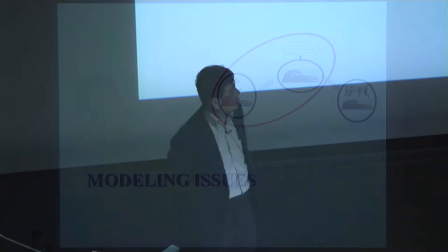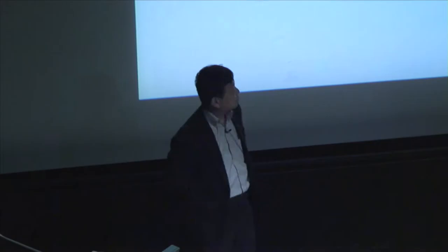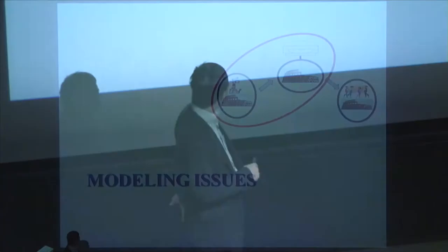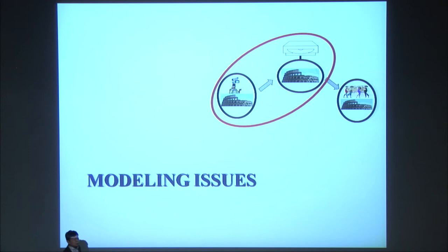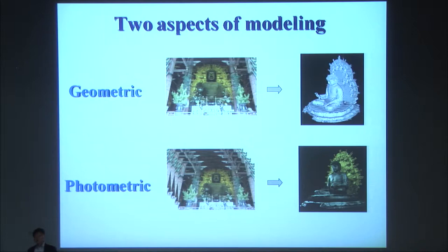In this eHeritage project there are two issues: one is how to model such heritage, and the second is how to display it. The first half of my talk is mainly about modeling issues. Within modeling, there are two kinds of problems: how to obtain shape information, and how to obtain color and specularity. First, geometric modeling.